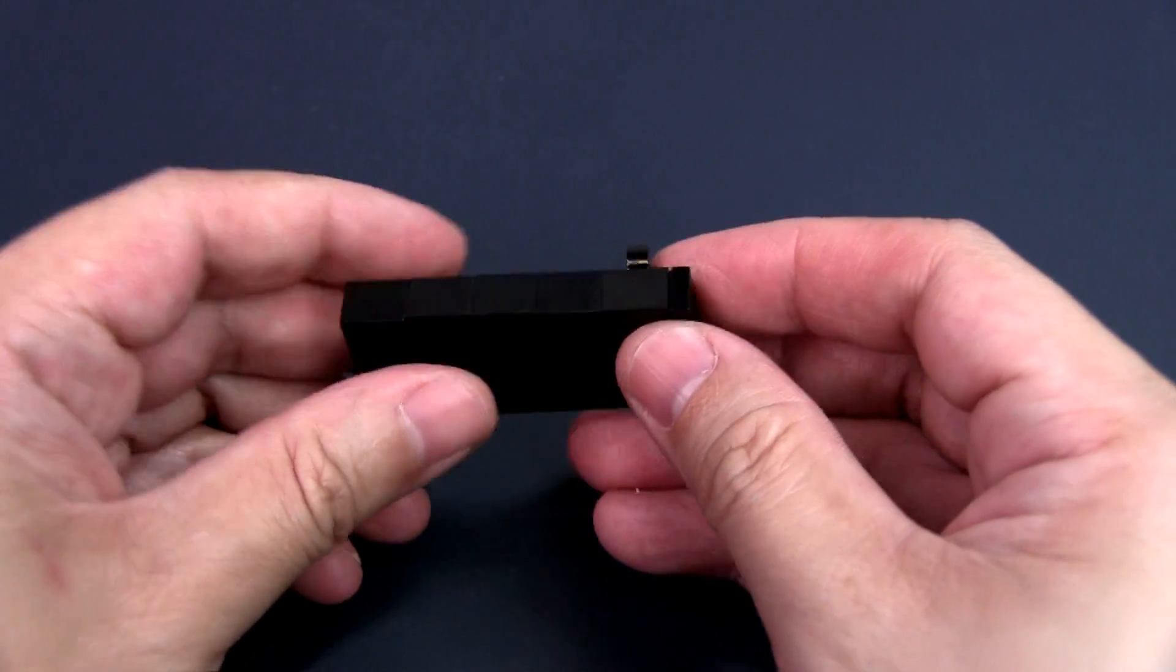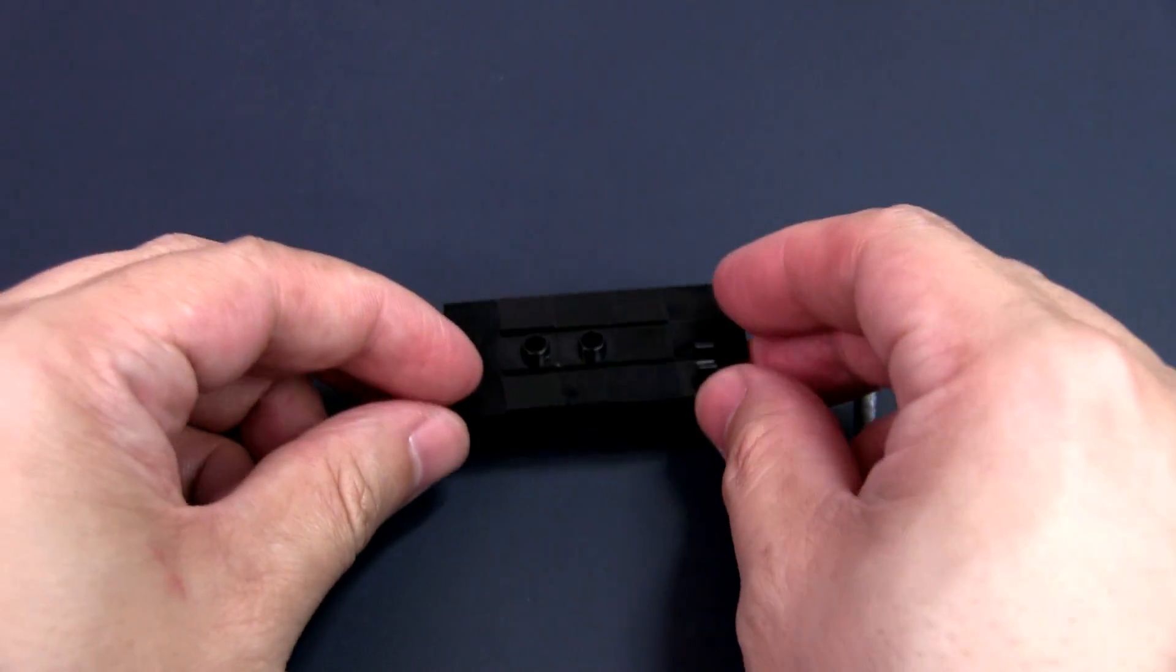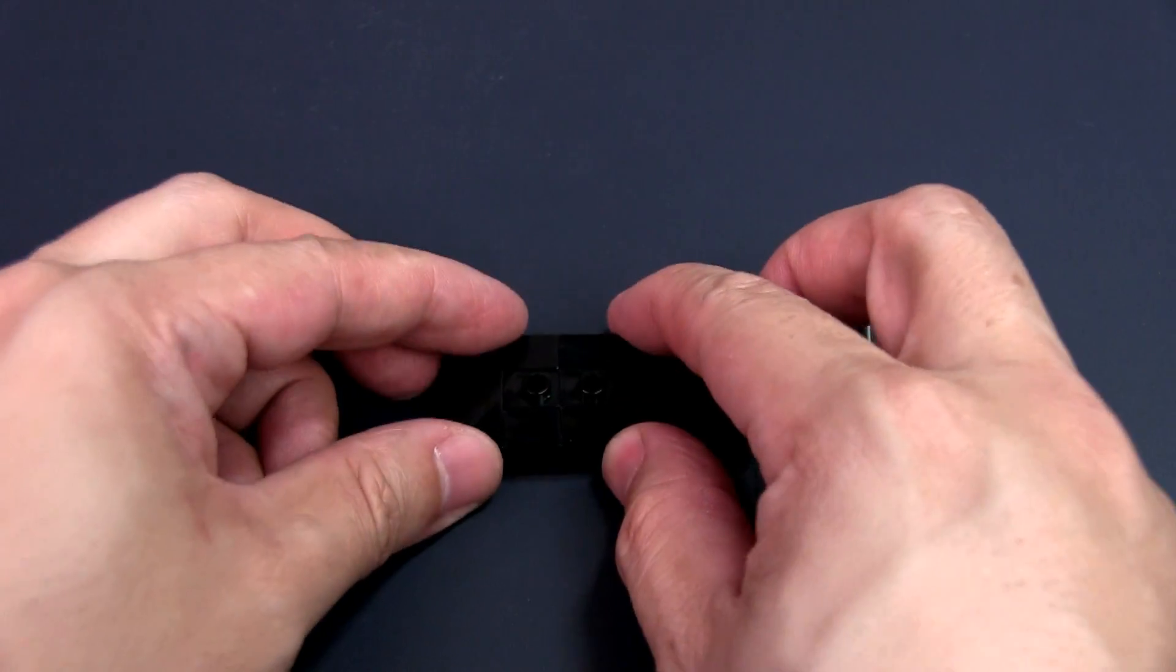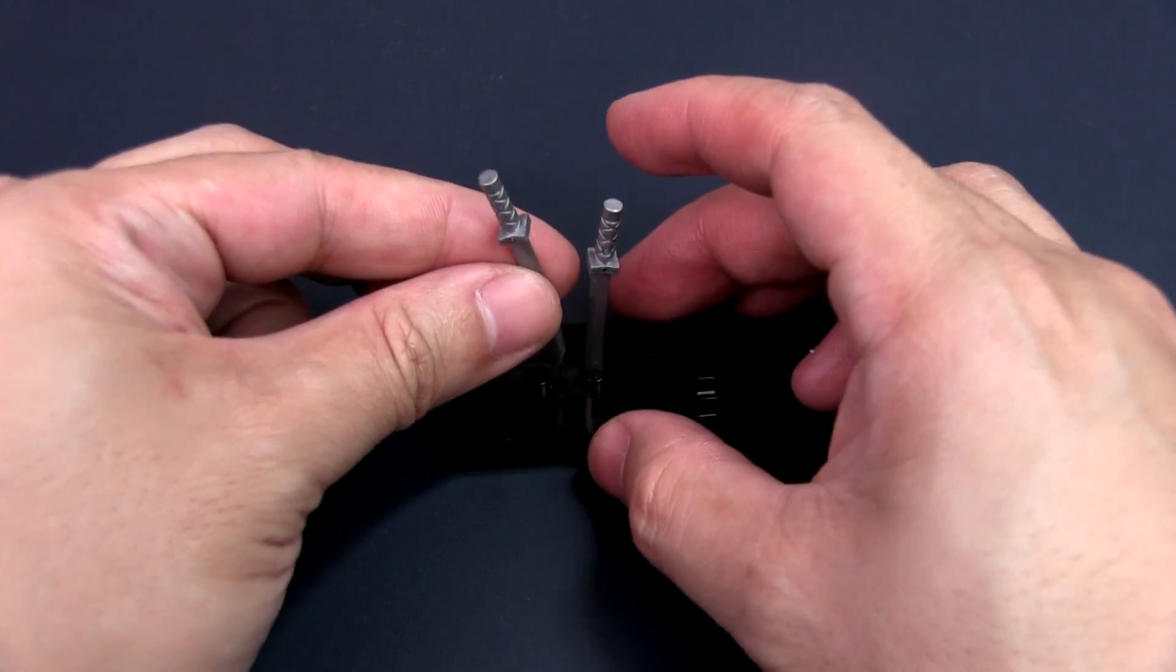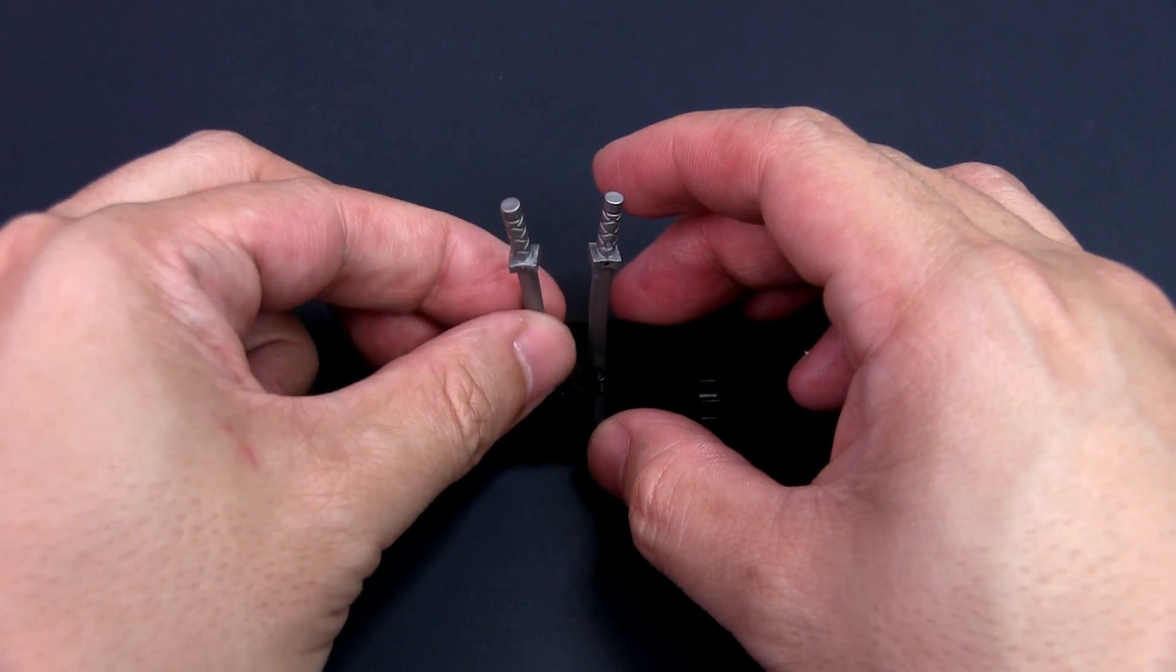Secure everything with the 1x3 plate. Place the two swords pointed down into the holes of the modified bricks. And this is your base platform for the sword suspension illusion.